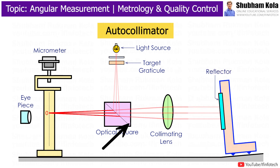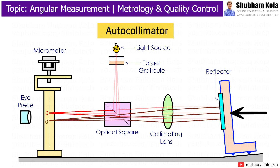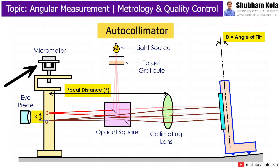If the reflector is tilted to a small angle, the reflected light will be deflected by twice the angle of tilt and will be brought into focus at point O', which is displaced by distance x from its original position. Distance x can be measured with the micrometer.